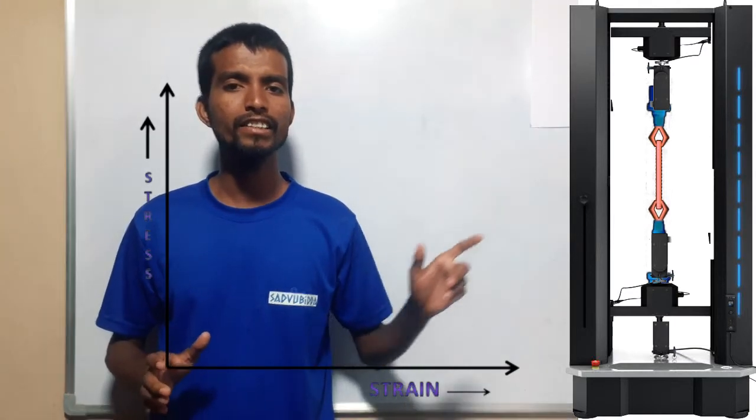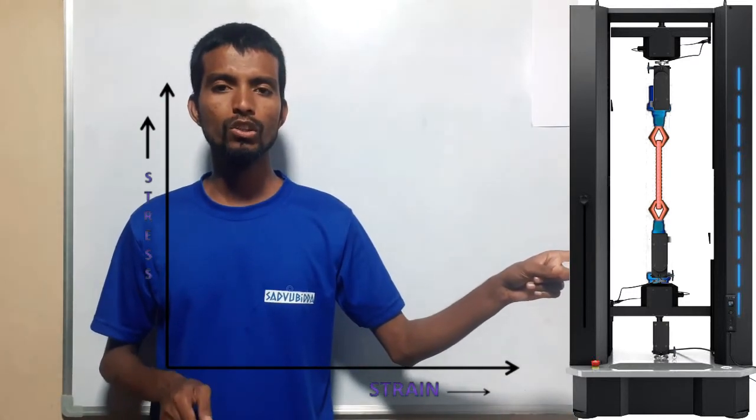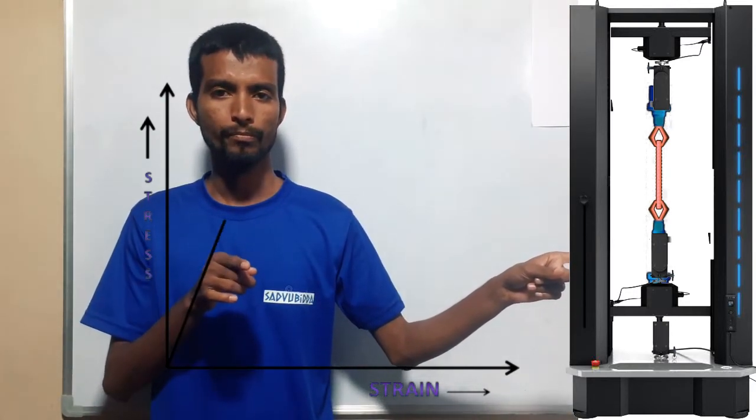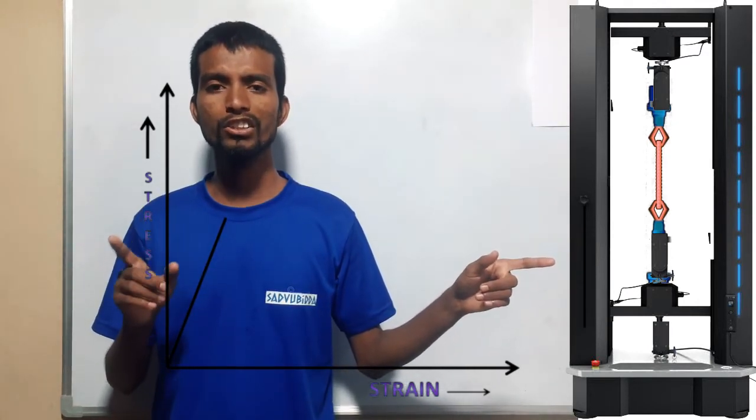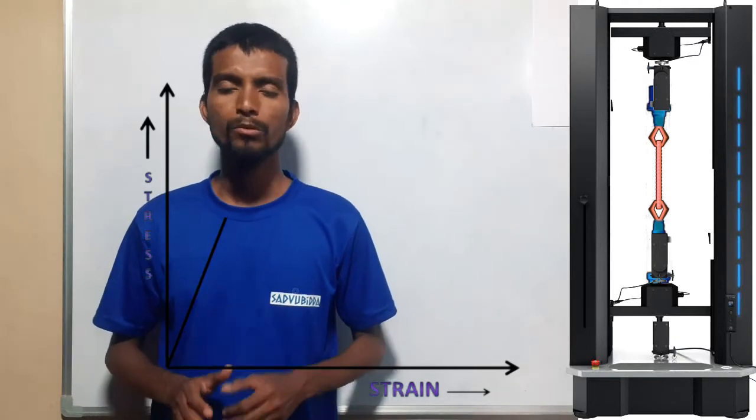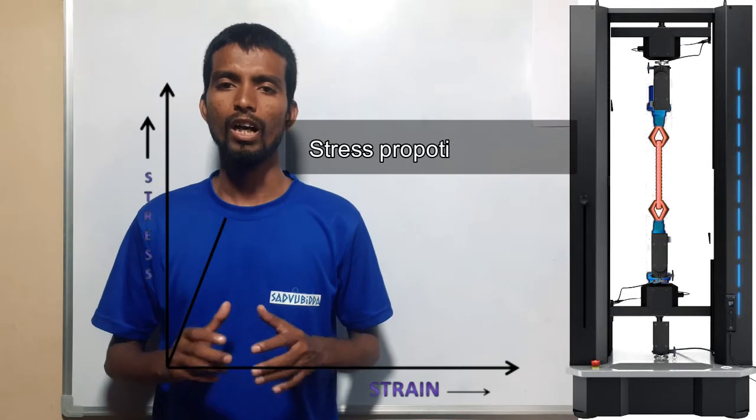When stress is increasing in the UTM machine, the curve starts increasing, because when there is a force there is stress, and when there is stress there is strain. So the graph starts increasing.